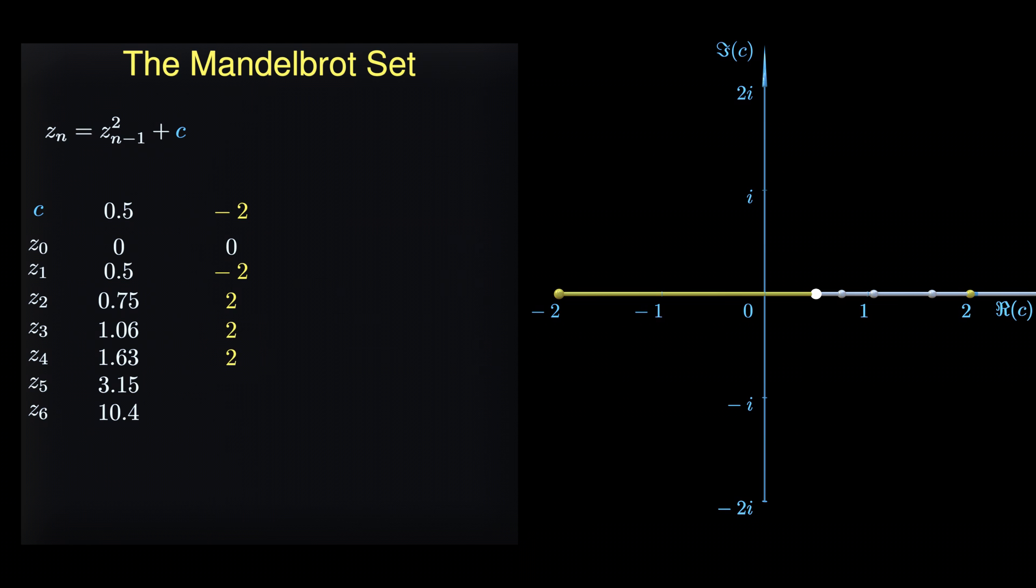Let's venture beyond the real number line and explore the sequence when C is the imaginary unit i. Surprisingly, this sequence oscillates between two distinct values. We close this introduction to the Mandelbrot set with one last example that shows a sequence oscillating between five different values.